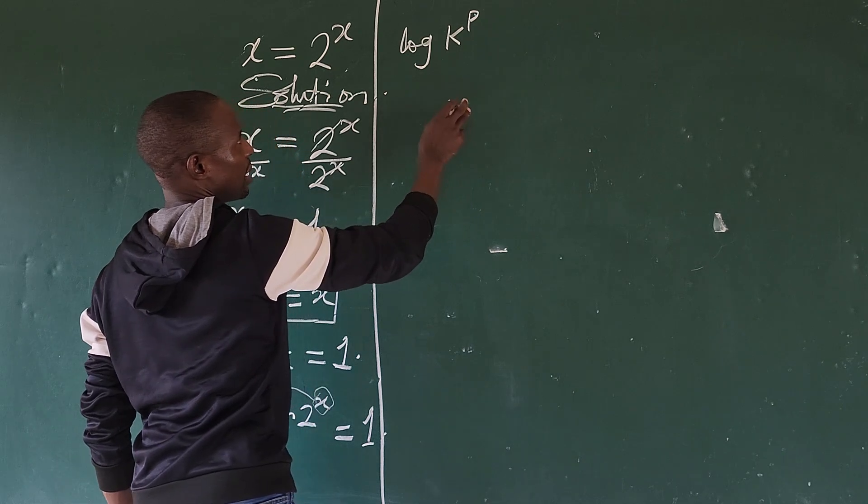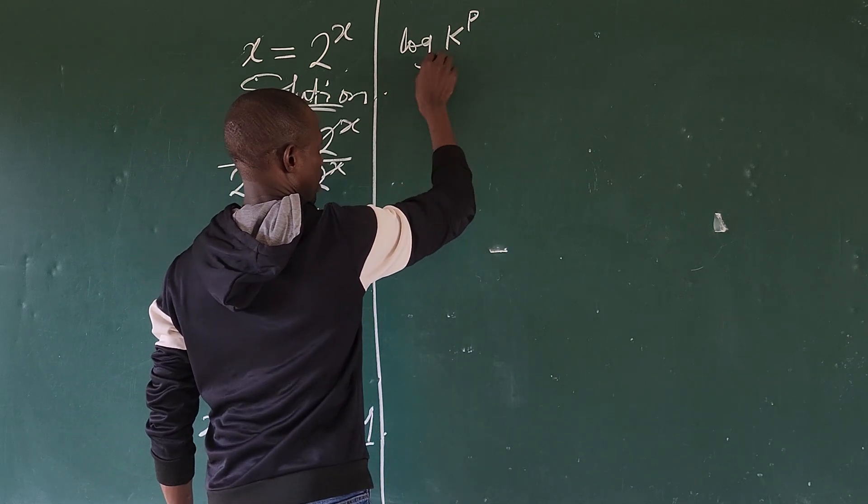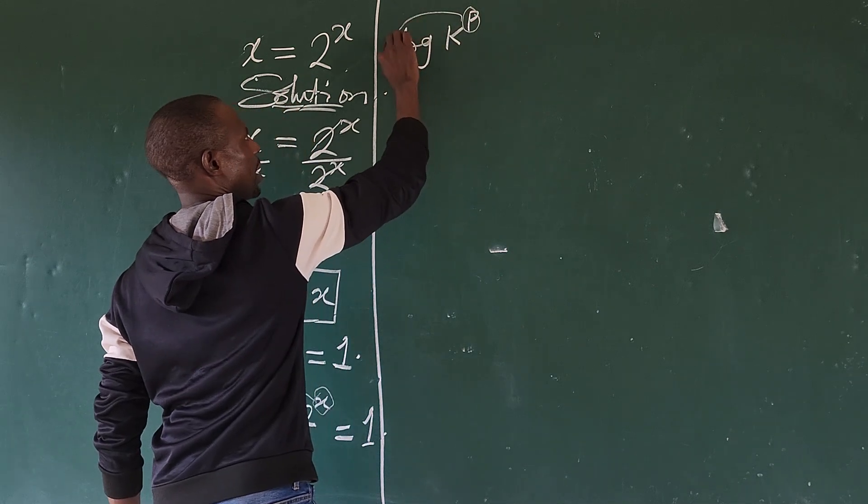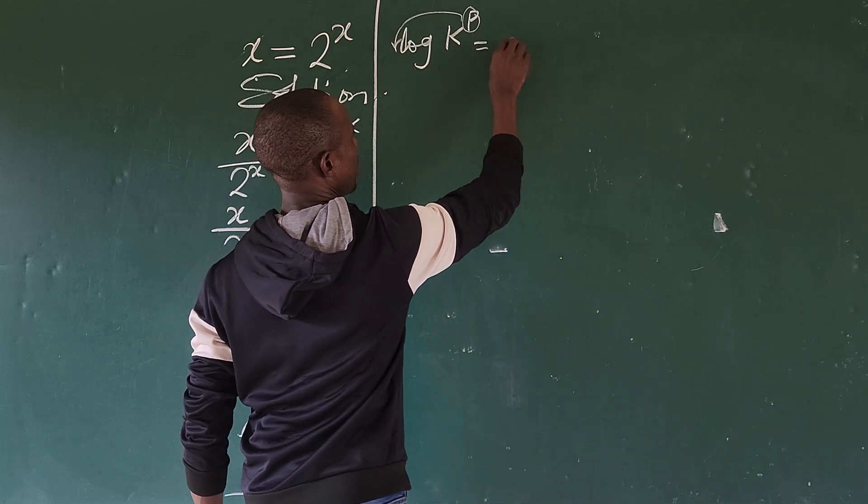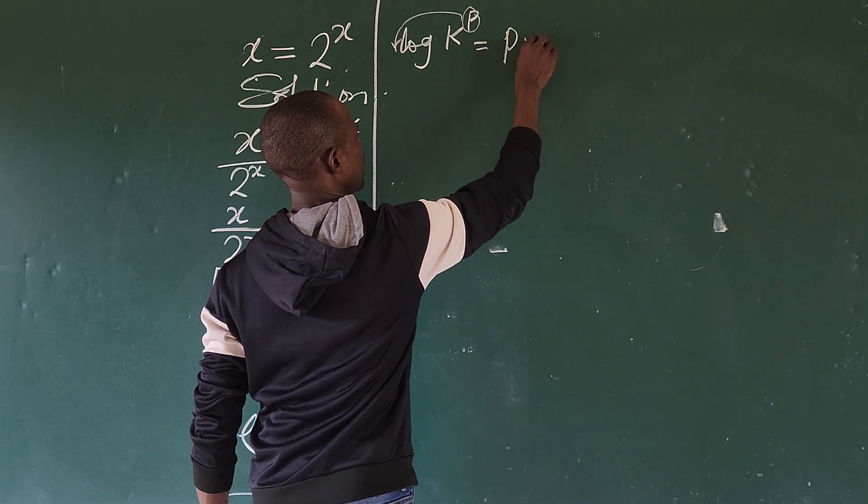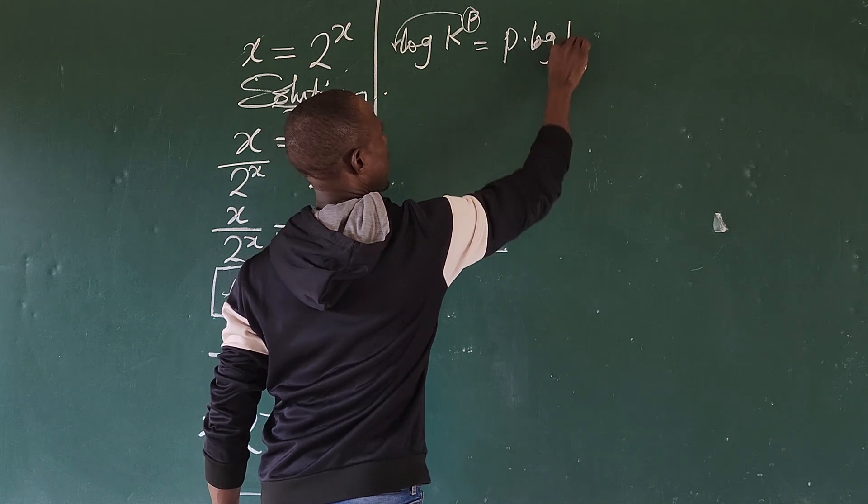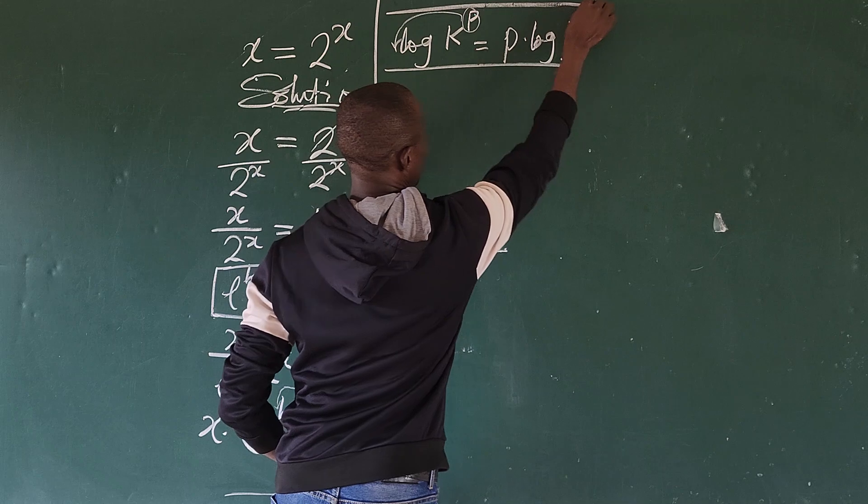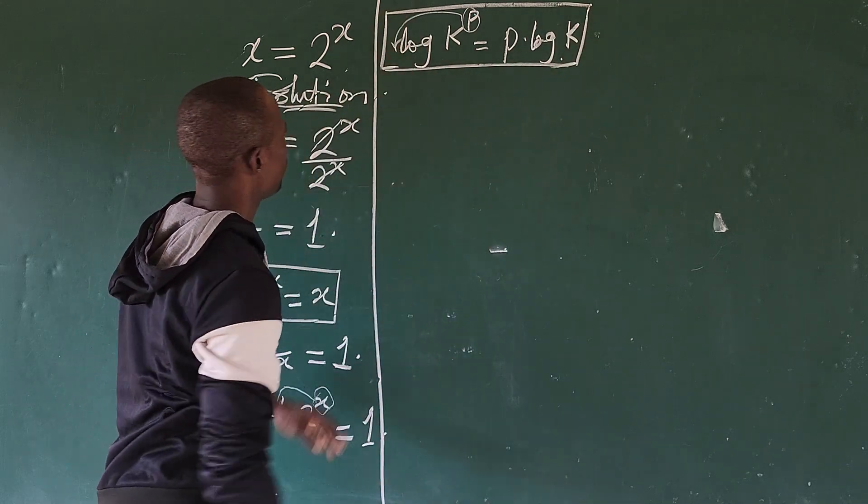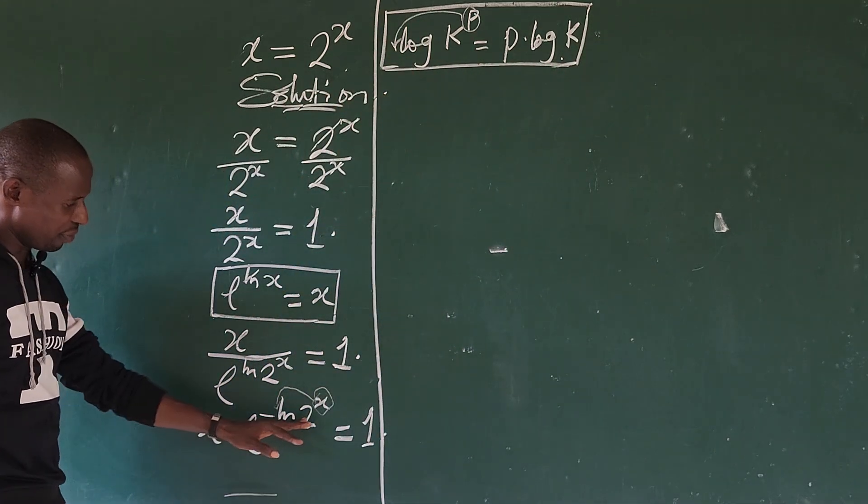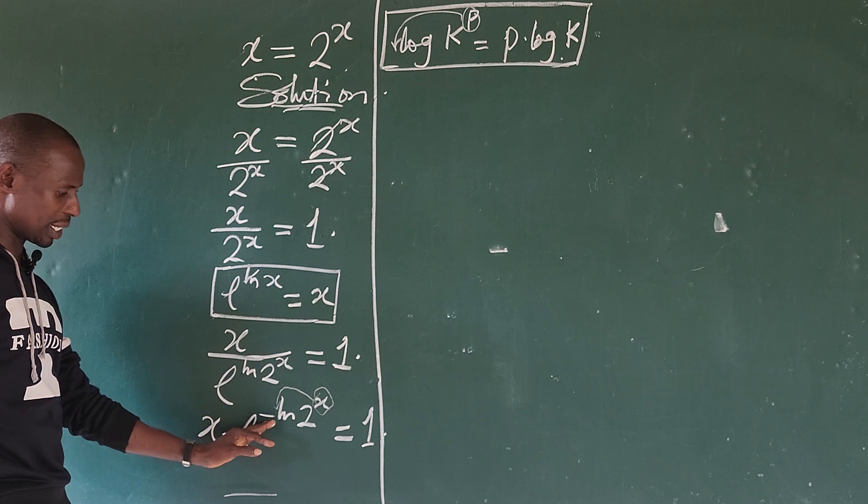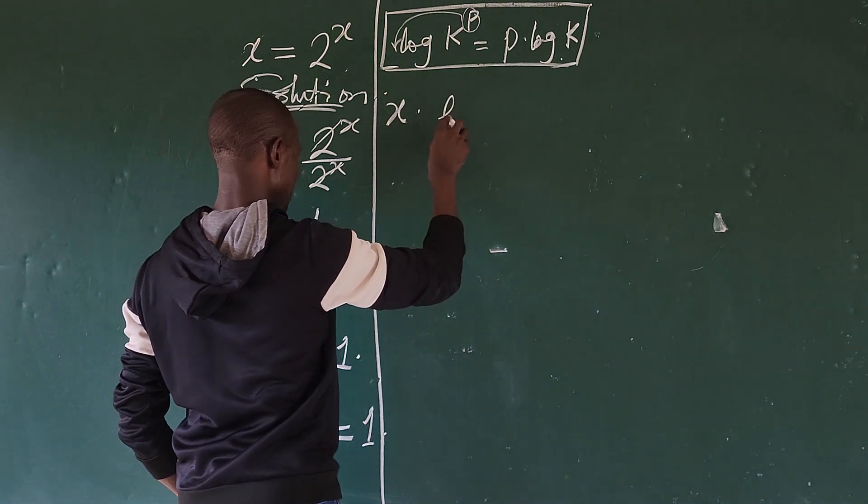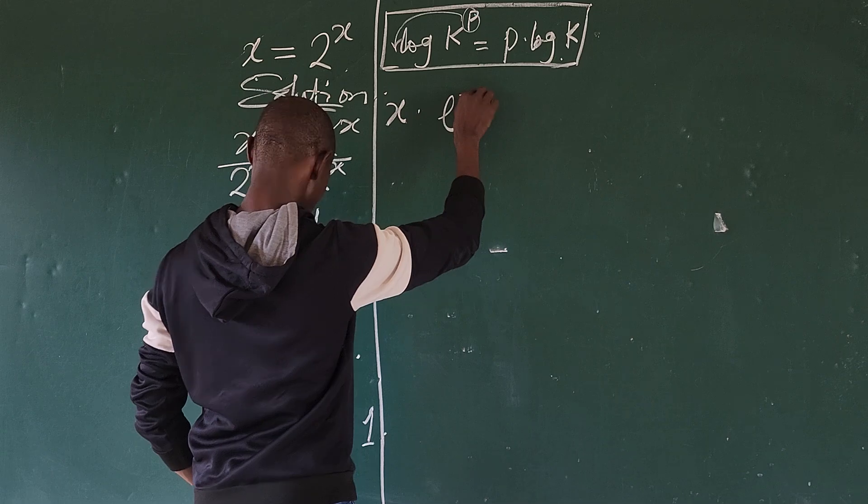...and you have a natural log, then it says move this back here, so this will now give us p times log k. If you remember this law, then what we do here is easy. All we need to do is to move this x back here. So we're going to have x times e to the power of minus x ln of 2, everything equal to one.